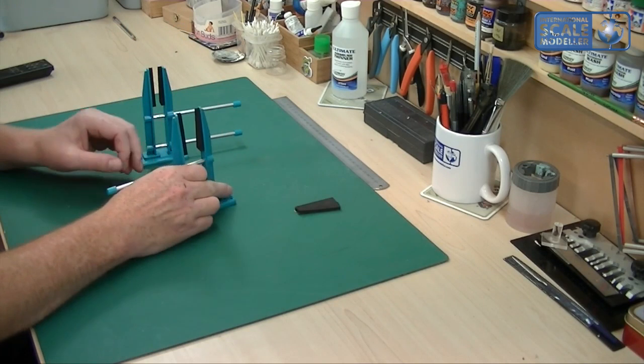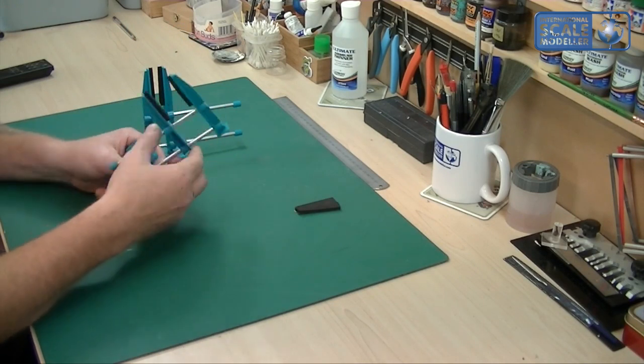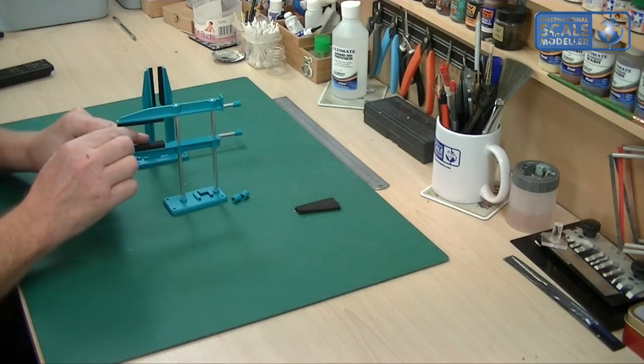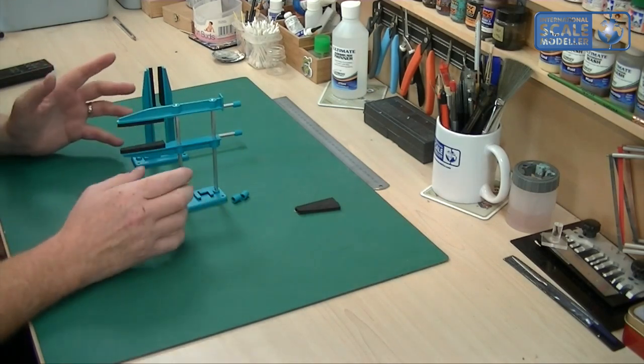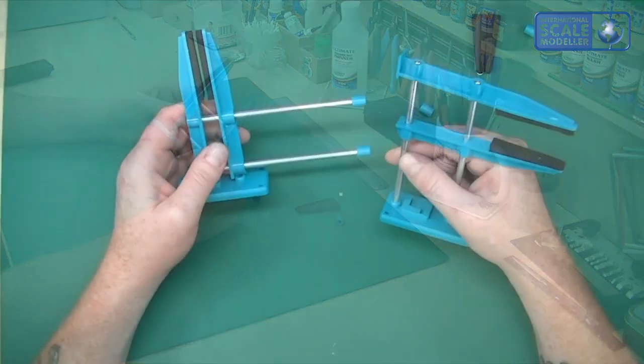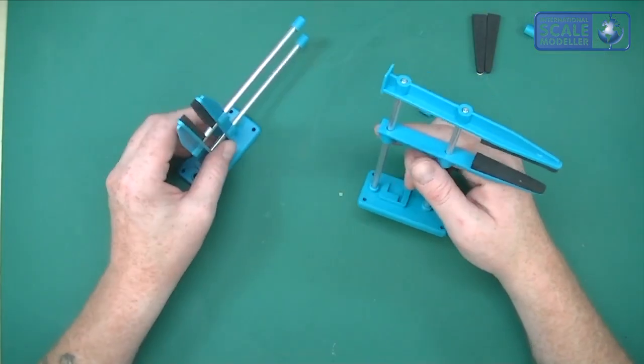So you can have them clamped both clamped that way. Let me take your end pieces off and then you can have them both clamps obviously that way for whichever way you want to do your hulls on your ships and things like that. So very very versatile.